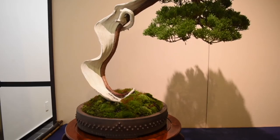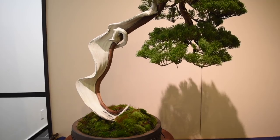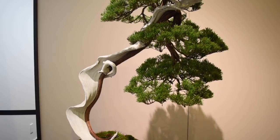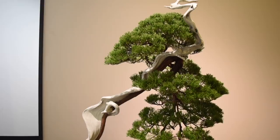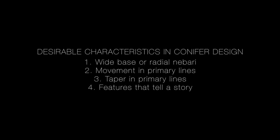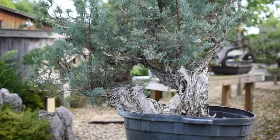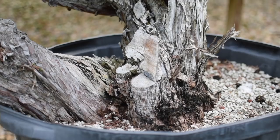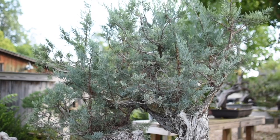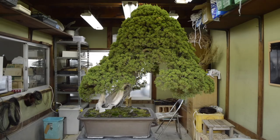So where do we begin the design process? The first step involves identifying the desirable characteristics of the tree. The word desirable here implies subjective value judgment, and this is important to understand. As a general rule of thumb in design, start at the beginning, which in bonsai means start at the bottom. One of the most desirable characteristics in bonsai design is a strong, wide base or surface root structure, also known as nebari.